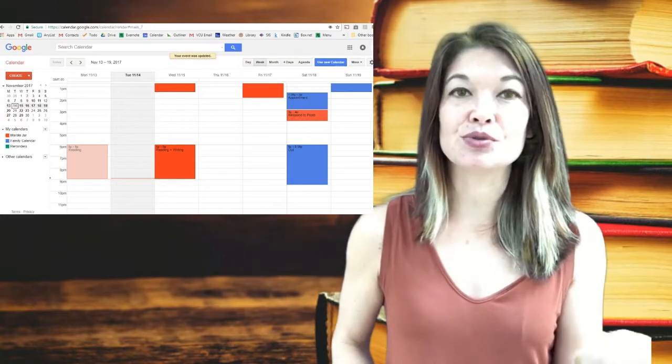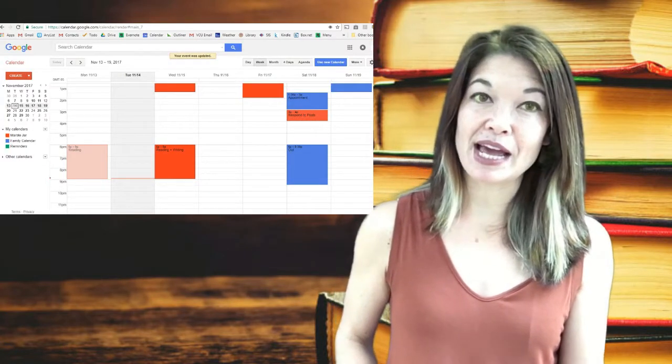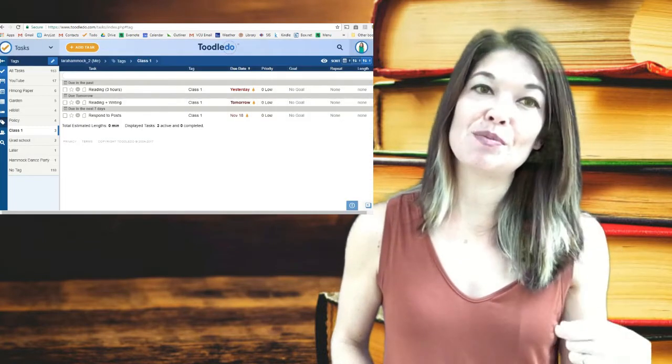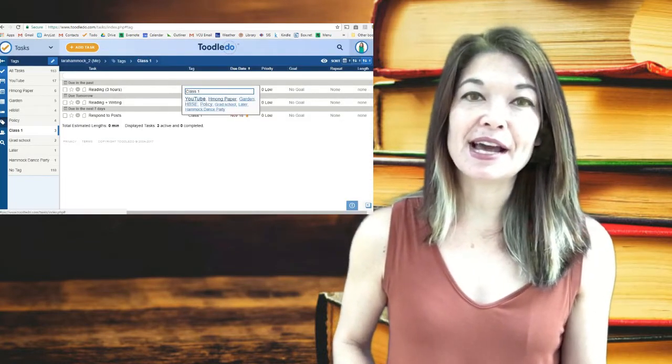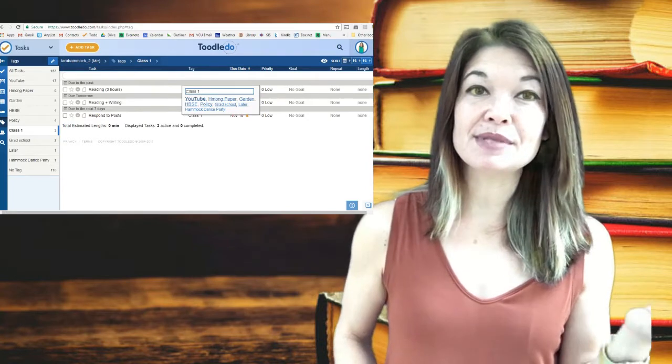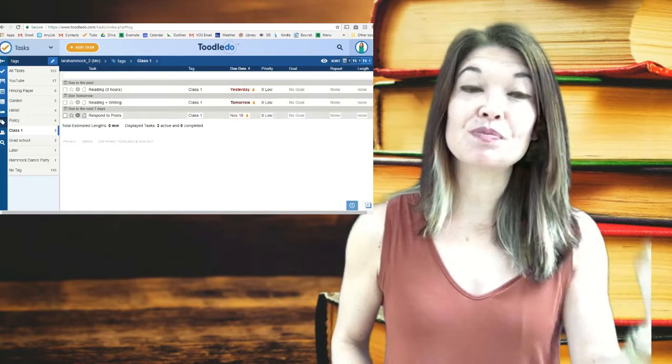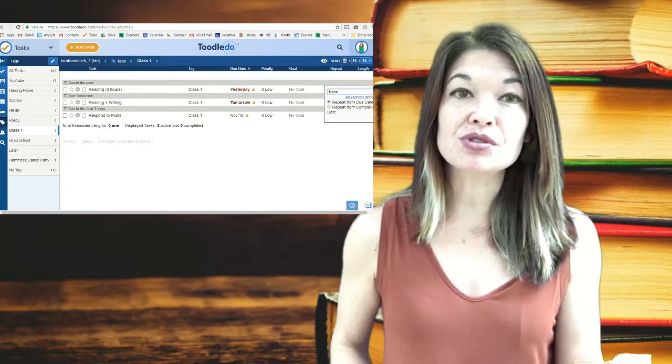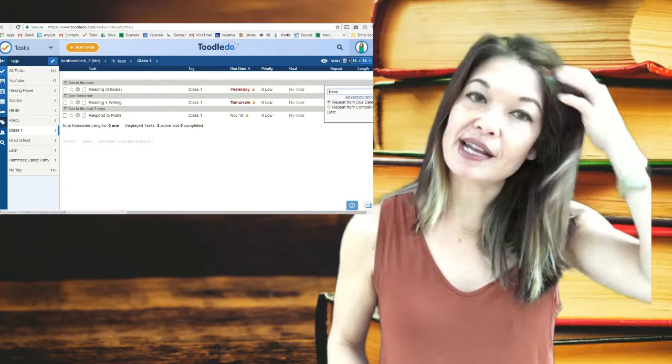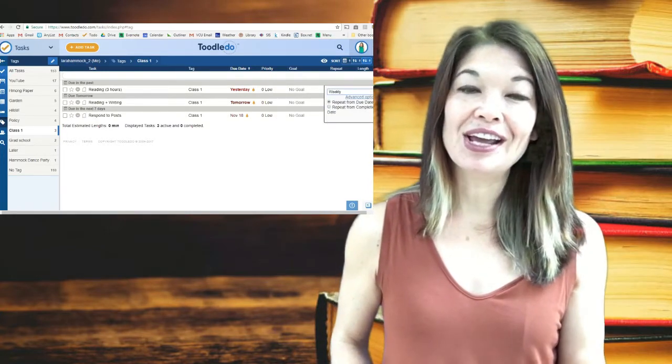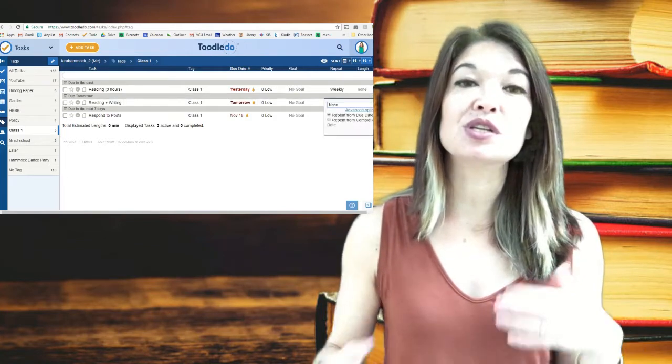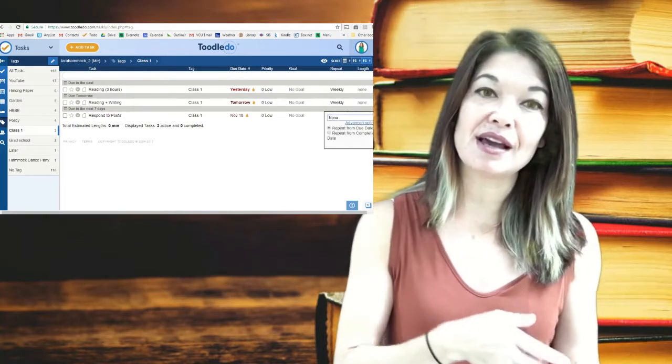Now that I've added these tasks in my calendar, I also need to add these generic tasks to Toodledo under a specific tag—we'll call this class one—and I'm gonna use the exact same dates that I used on my Google Calendar. I need to set these tasks to repeat weekly as well. Toodledo helps me see all of the tasks I have for this class together. If I fail to complete something, Toodledo will continue to remind me until it's done and I've checked it off. That's something that Google Calendar doesn't do.